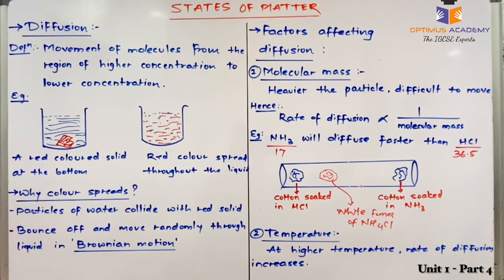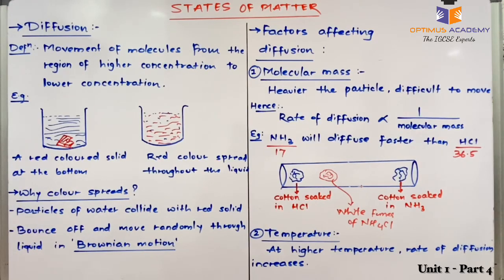We can explain the same phenomenon for perfume particles as well. When someone sprays perfume, the perfume particles collide with neighboring air particles in the room. As they collide, they bounce off and spread randomly throughout the house. This is why a person spraying perfume in one room causes the fragrance to reach another room — this is diffusion.